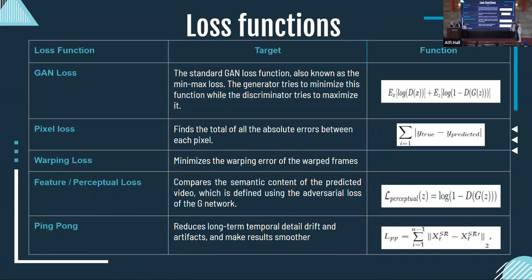Regarding our loss functions, we have been dealing with five main loss functions. The first is the standard GAN loss function, or min-max function, where the generator tries to minimize the function while the discriminator tries to maximize it. The second is the pixel loss function, which minimizes the absolute error between pixels. The third is the warping loss function, which minimizes the error between neighboring frames. The fourth is the perceptual or feature loss function, which compares the semantic content of the video using the adversarial network. Finally, the newly introduced ping-pong loss function reduces long-term temporal artifacts while keeping the details.